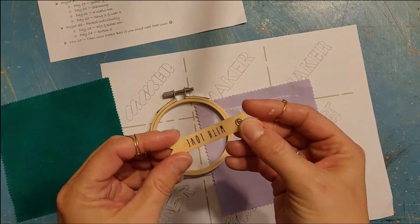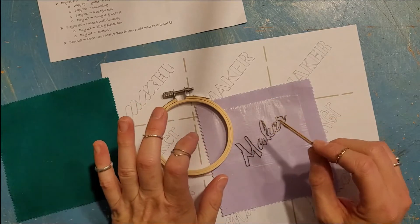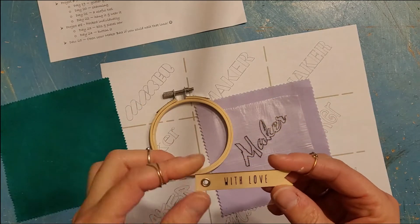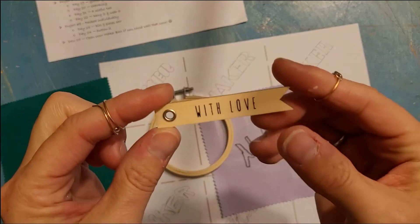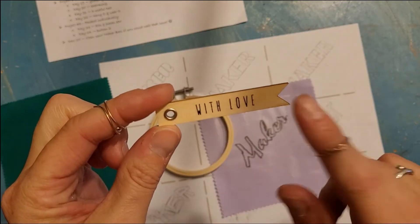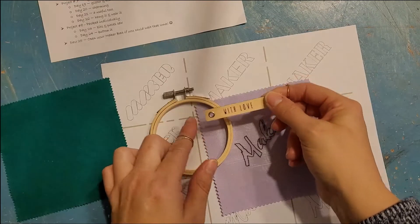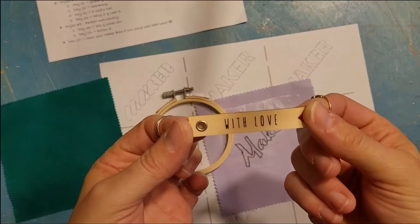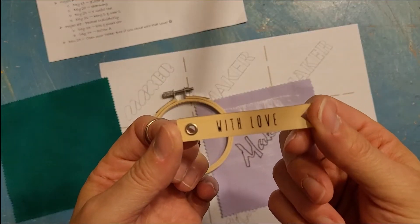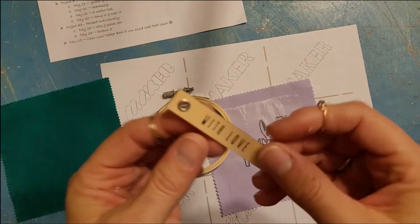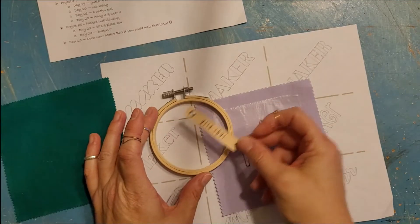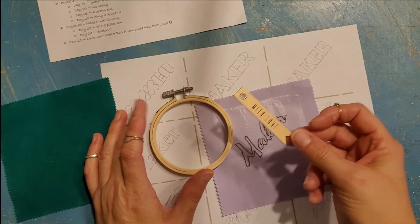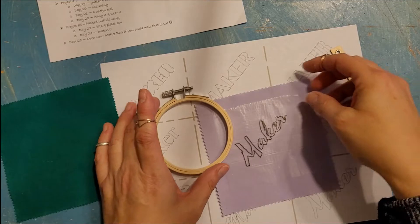So you're probably guessing that we're gonna do some embroidering. This little tag you can add to your project if you would like or you can put it in your junk journal. It is a wooden tag. I'm gonna put mine in my junk journal but you can save it for the end and decide if you want to put it on here or what you want to do.